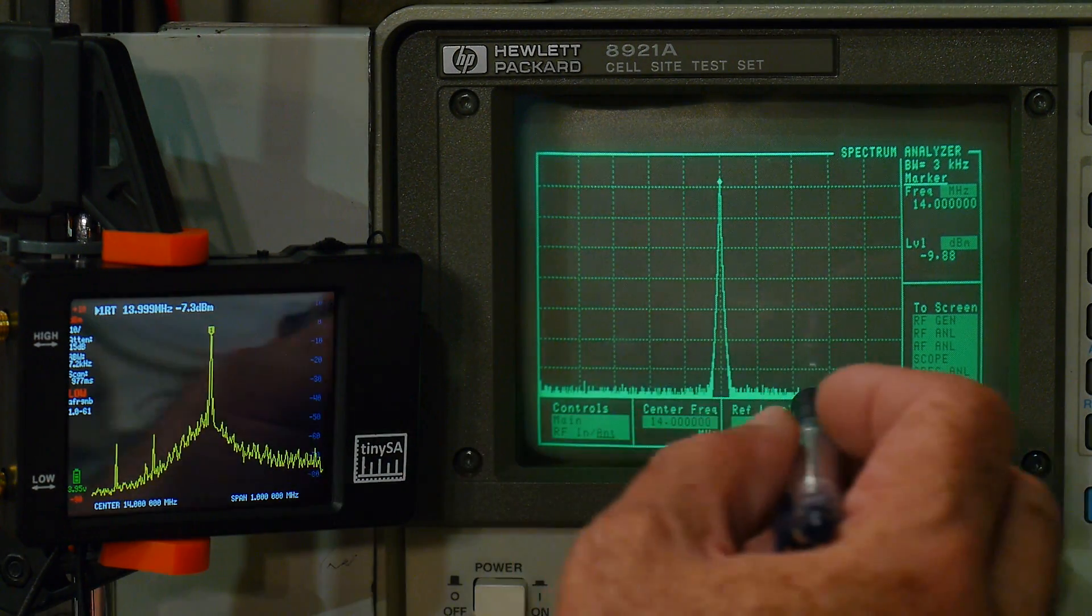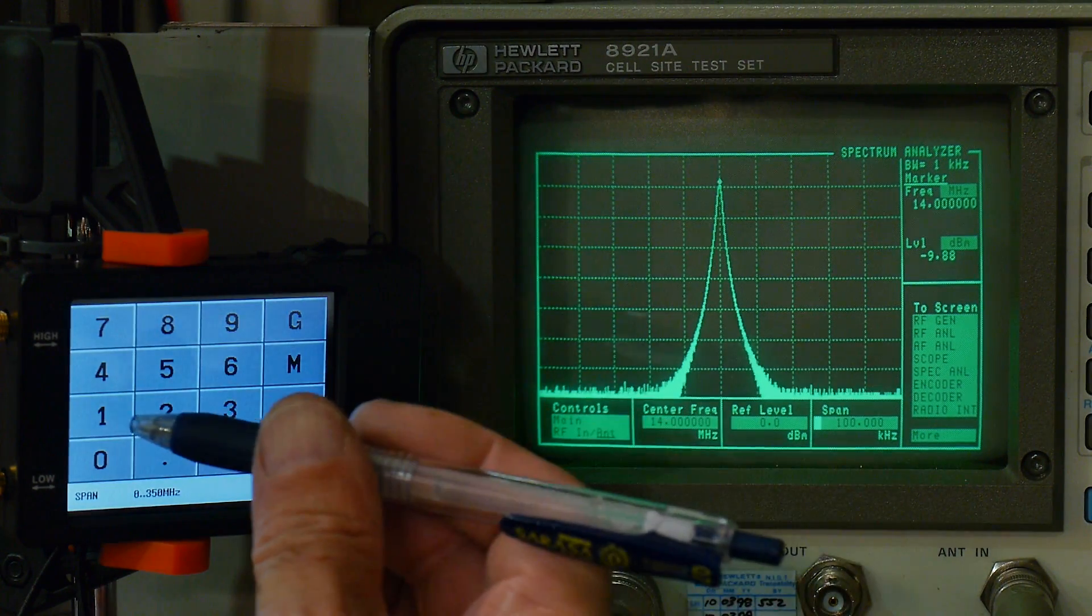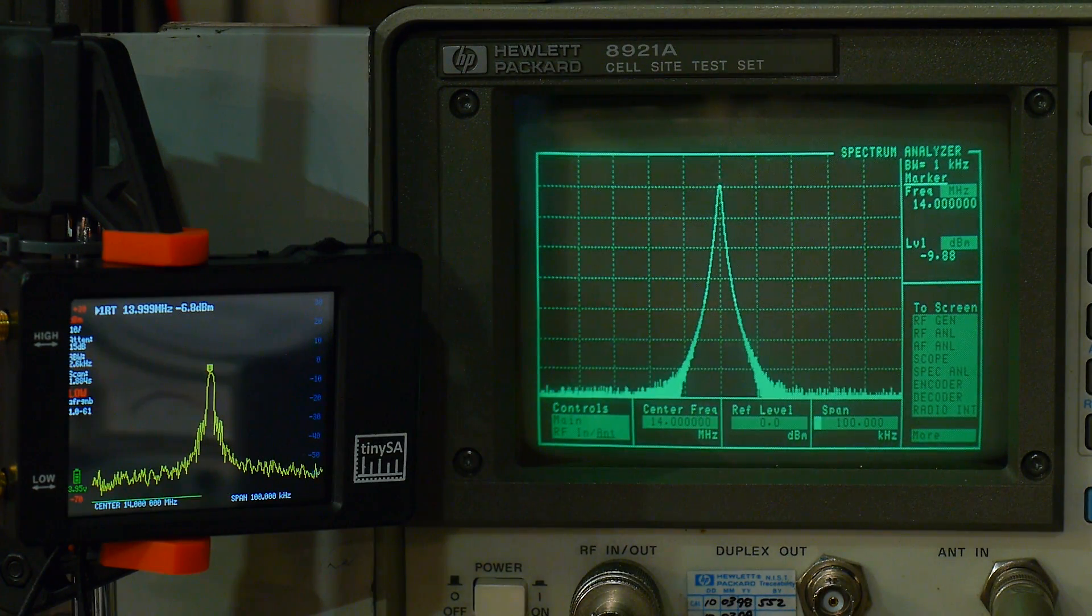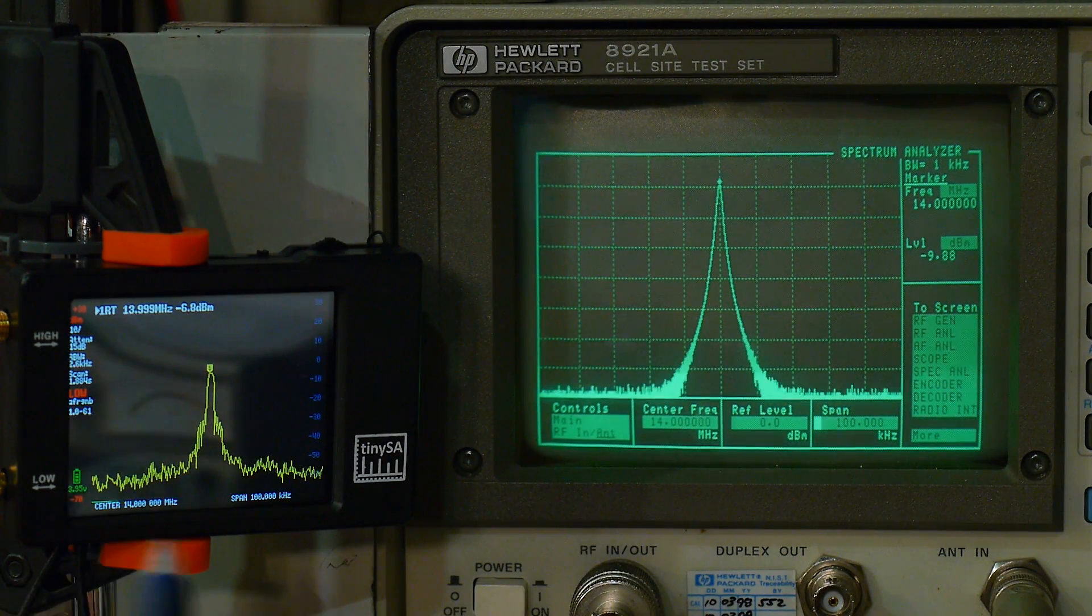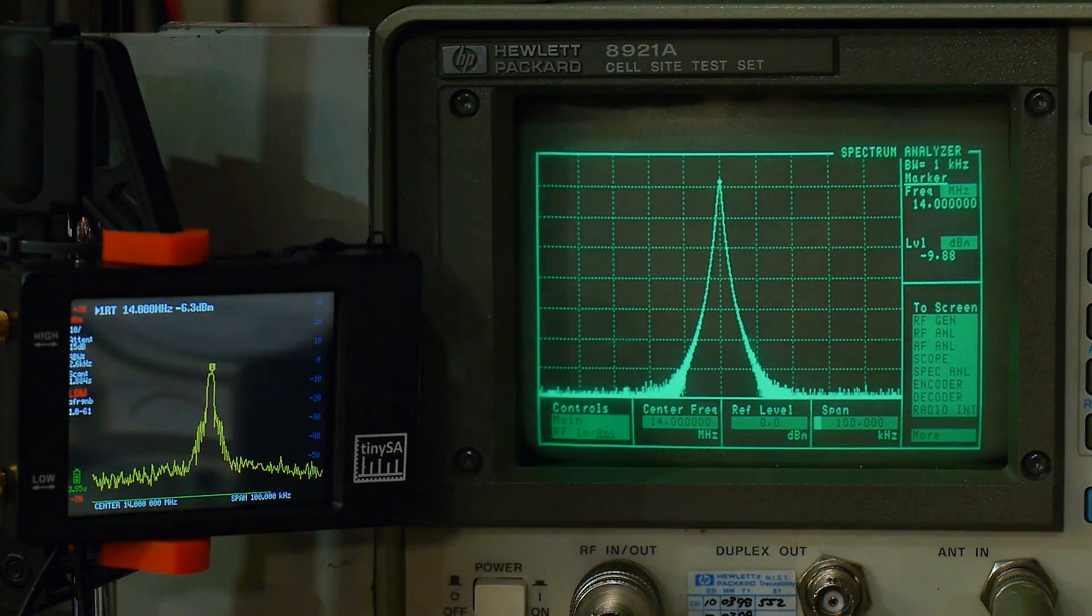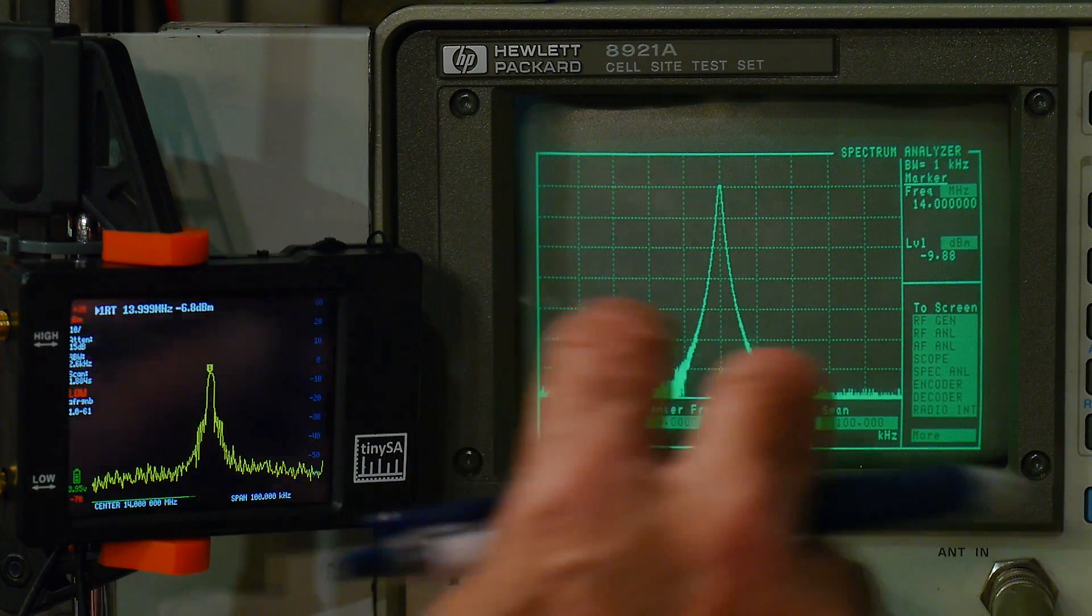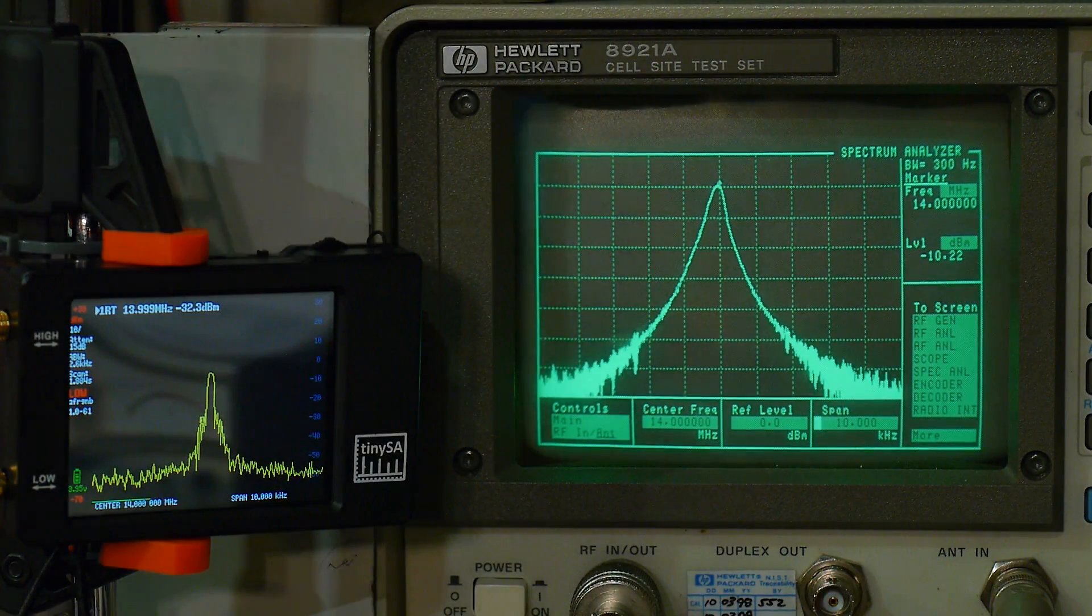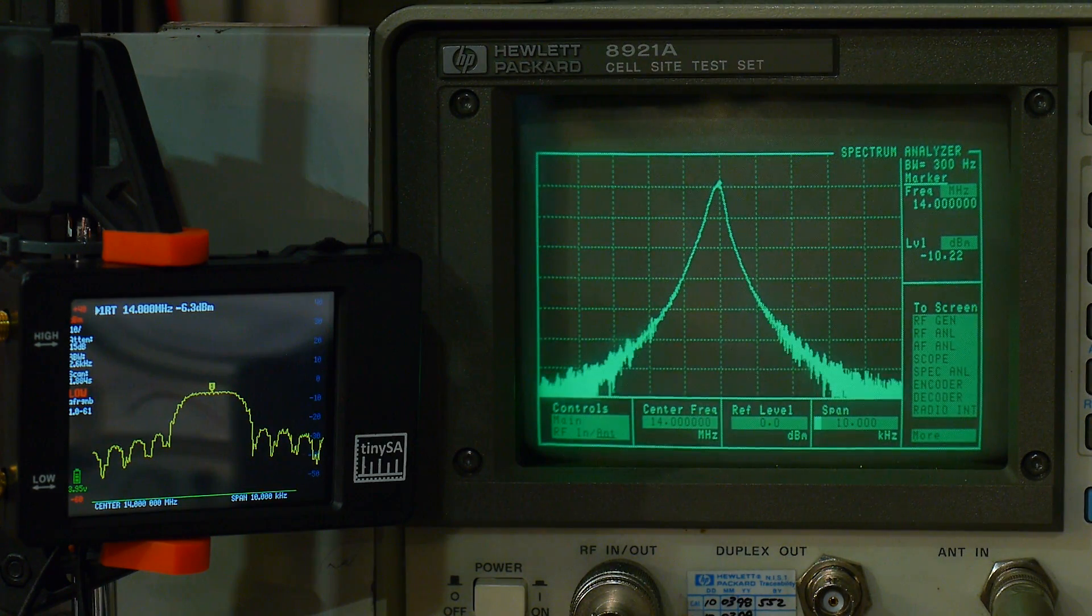Let's zoom in some more to 100 kilohertz. It's kind of a funny shape. It's not a nice shape like this here. That's probably an artifact of the IF filters that the TinySA has. This has a very narrow 1 kilohertz bandwidth here and we're at a 2.6 kilohertz bandwidth here. Let's go to a 10 kilohertz sweep. This one's just kind of falling apart. It's not doing a good job at small sweeps.